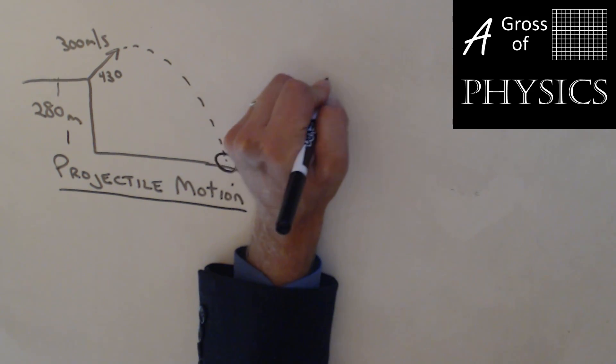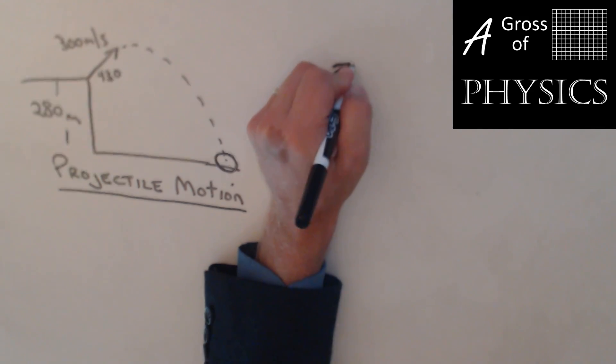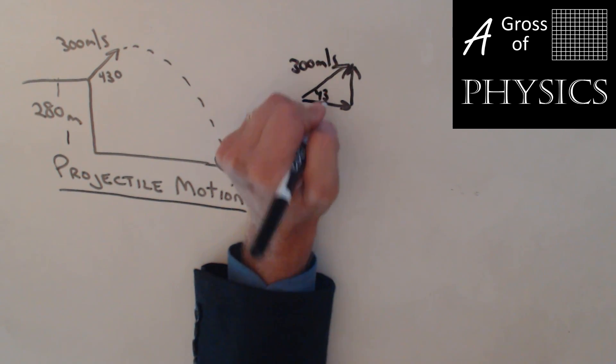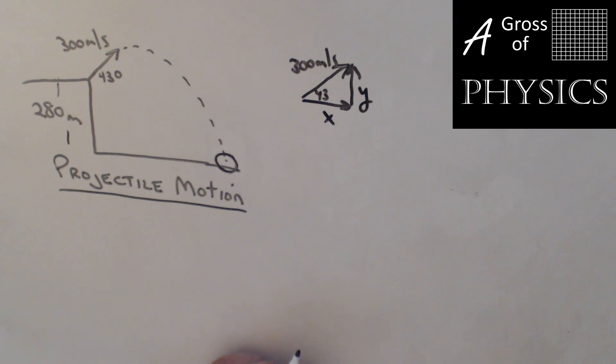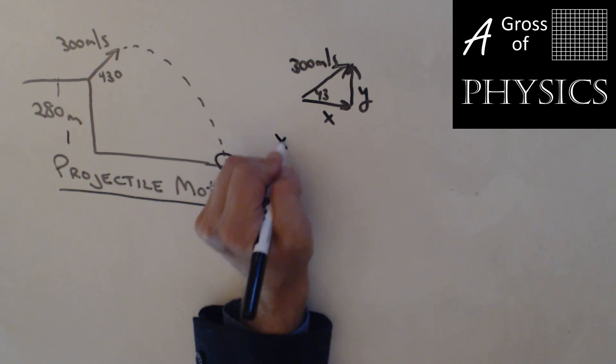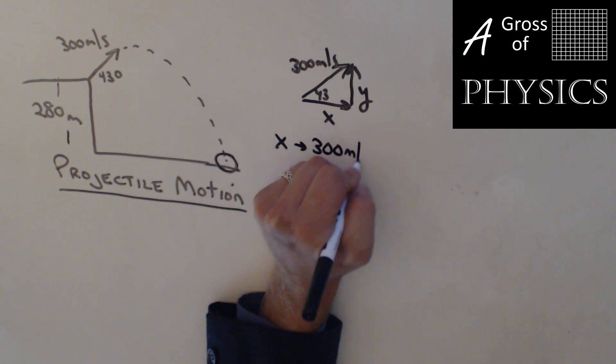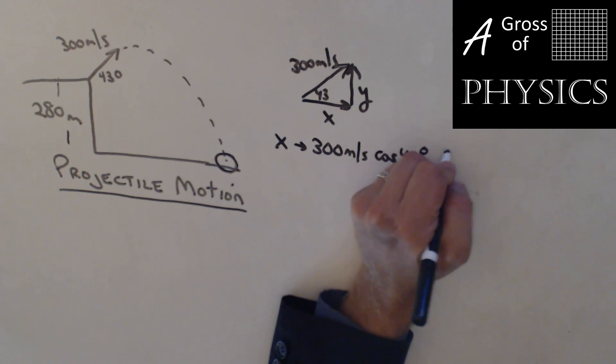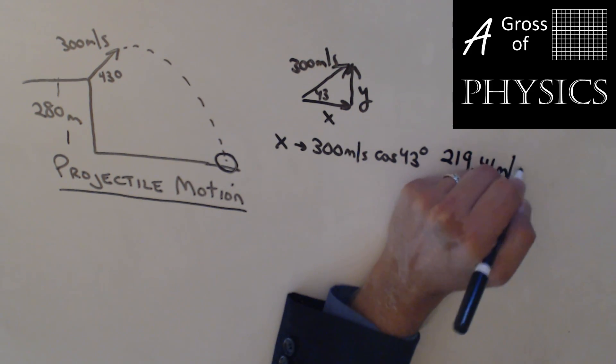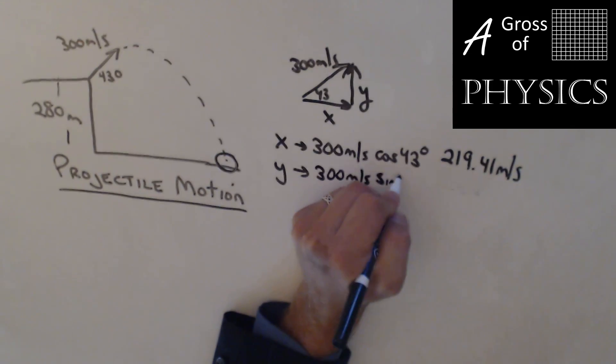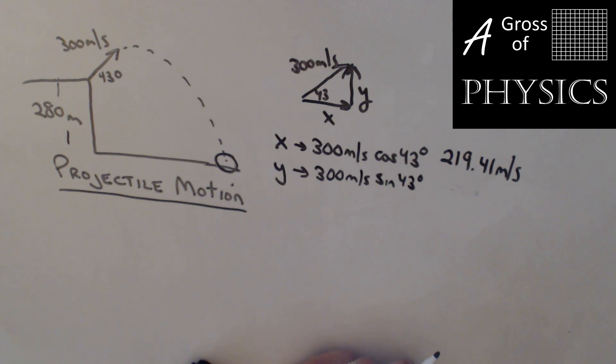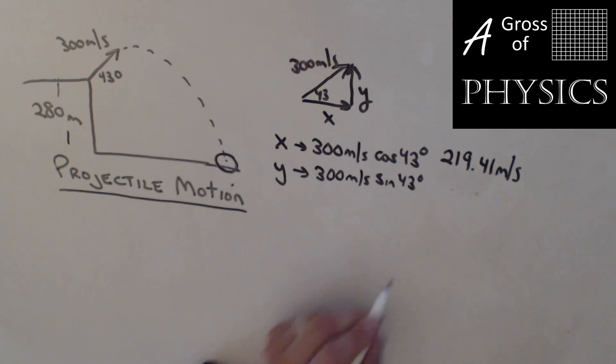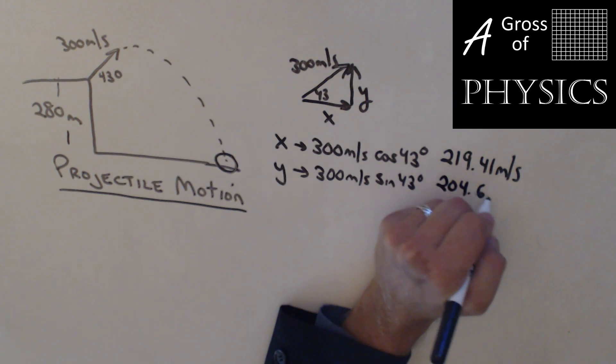The first thing we're going to have to do is resolve that 300 meters per second at 43 degrees into x and y components. For the x component, 300 times the cosine of 43 is 219.41 meters per second. In the y direction, it's 300 meters per second times the sine of 43 degrees, which is 204.6 meters per second.